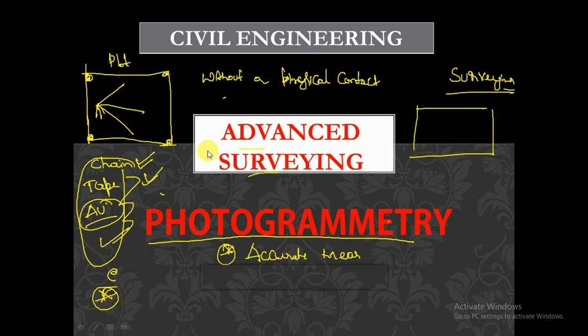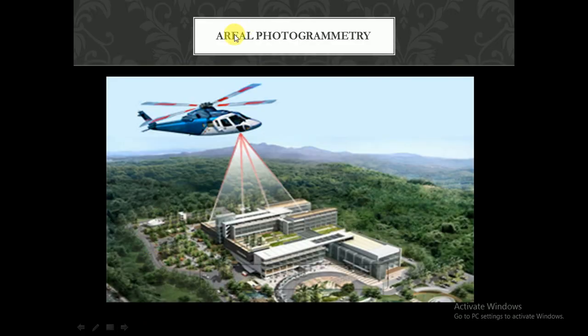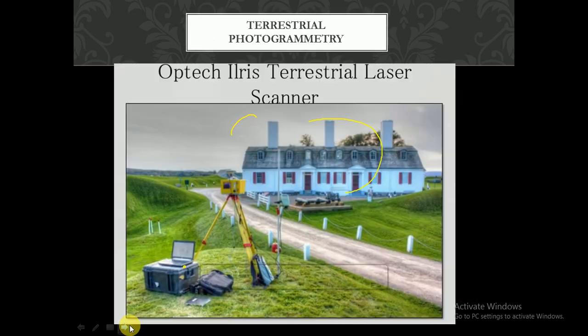This is how the technology has been improved. Aerial photogrammetry is a branch of photogrammetry wherein photographs are taken by a camera mounted in an aircraft flying over the area. Terrestrial photogrammetry is also a branch of photogrammetry wherein photographs are taken from a fixed point near the ground — from some elevated area — in order to get accurate measurements.